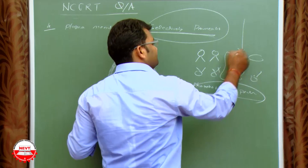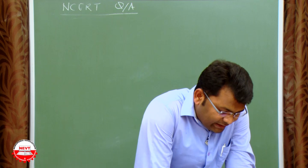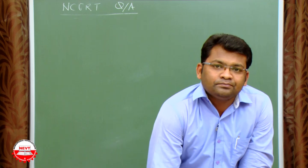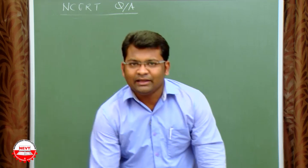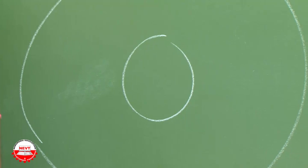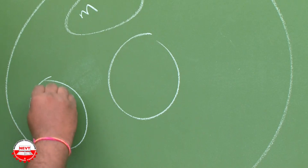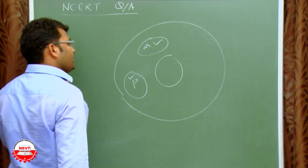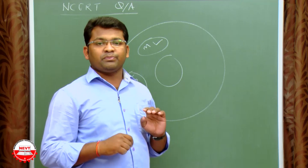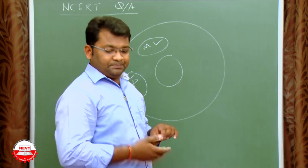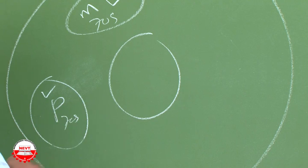Next: name the two organelles that contain their own genetic material. The genetic material is DNA. The organelles having their own DNA are mitochondria and plastids. Both mitochondria and plastids have their own DNA and their own 70S type ribosomes, similar to those in prokaryotic cells.